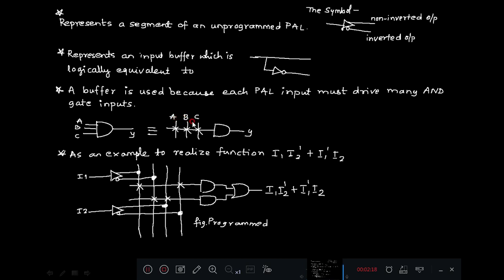In PLA representation, there is a horizontal line and the number of inputs ABC are represented as vertical lines, and the X mark indicates there is a connection. So this represents a three input AND gate where Y equals A and B and C.